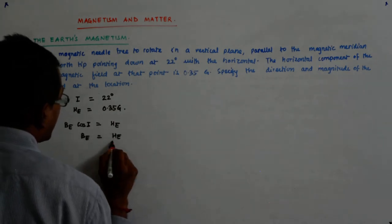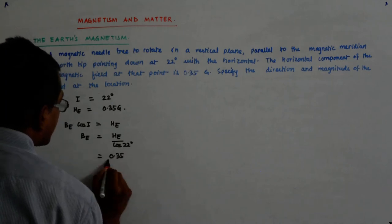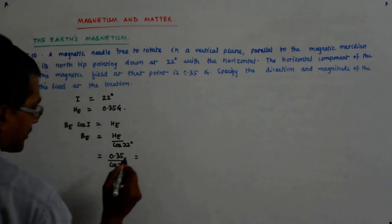So that is He upon cos 22 degrees. That is 0.35 divided by cos 22 degrees.